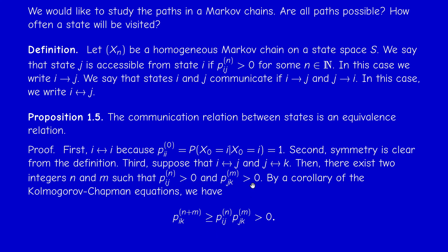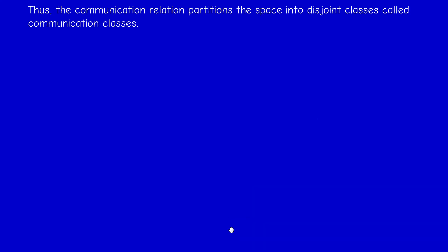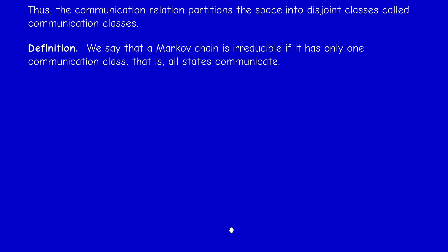By symmetry we can also go from k to i, so i and k communicate. This is truly an equivalence relation and therefore it partitions the state space S into equivalence classes called communication classes. If there is only one communication class, this means all states communicate, and in this case we say the Markov chain is irreducible — a very important concept. Not all Markov chains are irreducible. Let me give some examples.